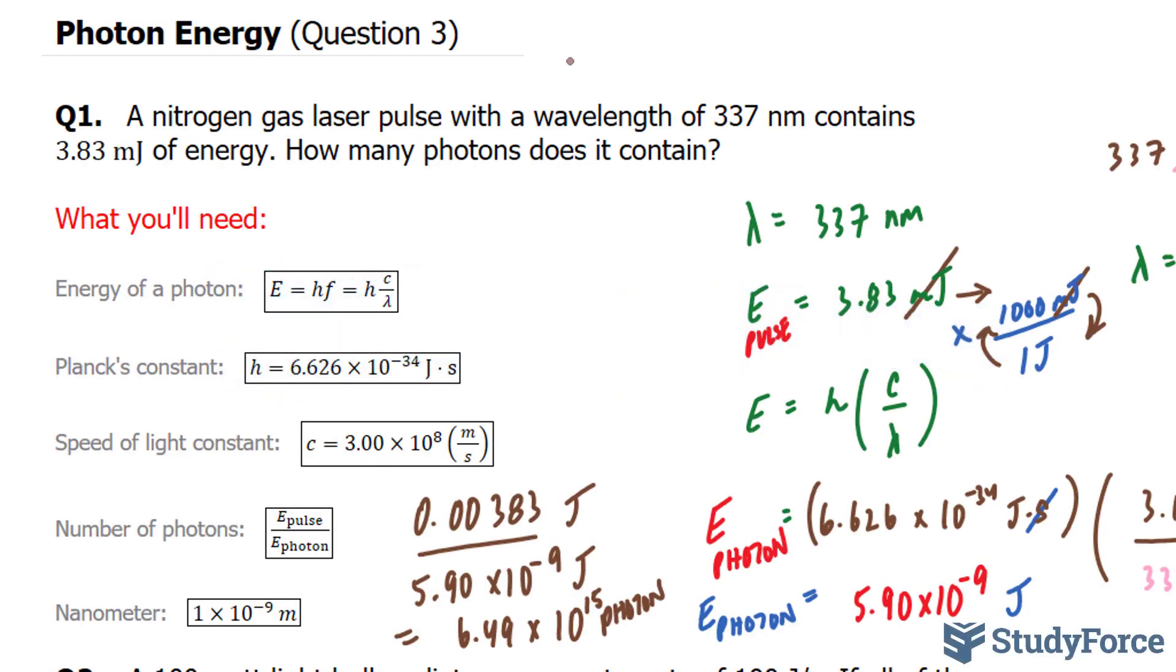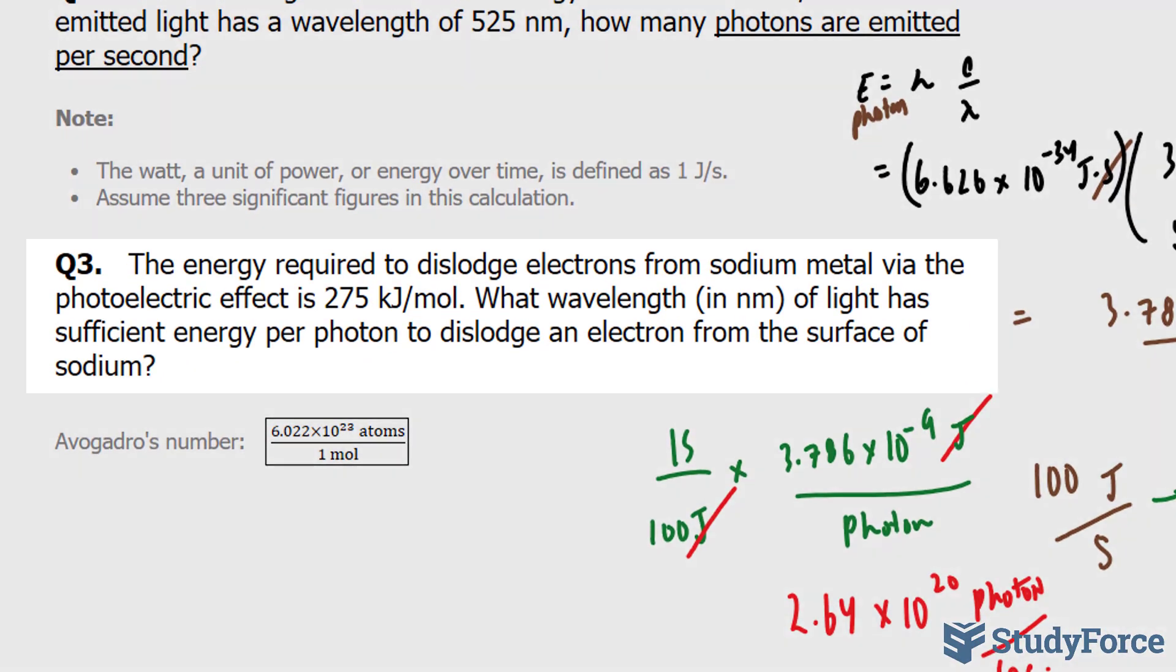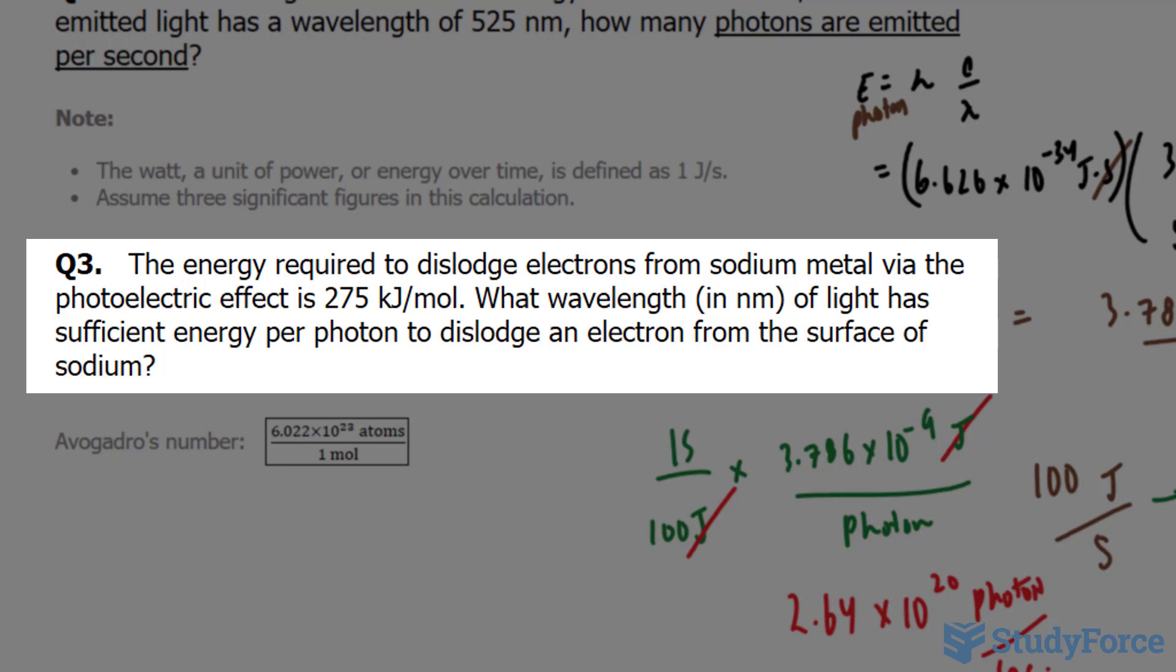In the final question of this series where we learn how to solve photon energy problems, we're asked: the energy required to dislodge electrons from sodium metal via the photoelectric effect is 275 kilojoules per mole. What wavelength in nanometers of light has sufficient energy per photon to dislodge an electron from the surface of sodium?